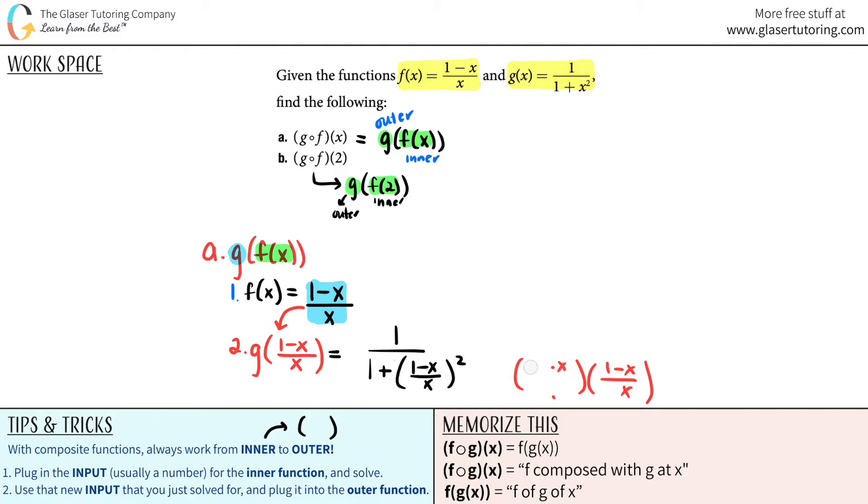That means that any time that I see an x value, I need to plug in 1 minus x over x. So for this one it would be 1 over 1 plus, the x value is now this, so 1 minus x over x, and you square that. Now if you want to simplify you can. They all mean the same. So this is the answer for the first part.